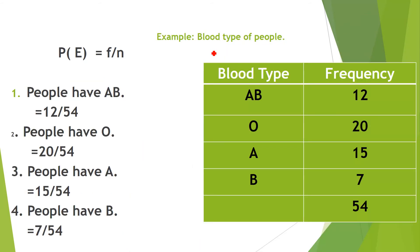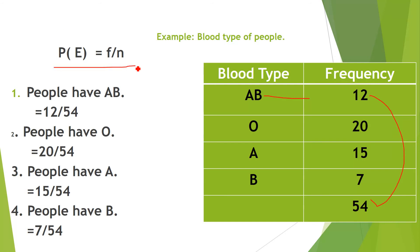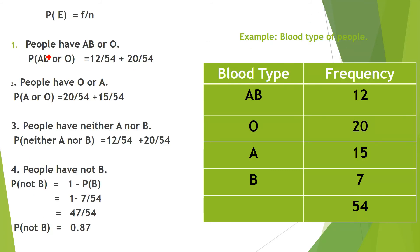Another example: blood type of people. A sample of 54 people was observed: 12 have AB, 20 have O, 15 have A, and 7 have B. Using the empirical formula: P(AB) = 12/54, P(O) = 20/54, P(A) = 15/54, and P(B) = 7/54.